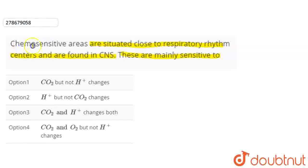So guys, this question asks what chemosensitive areas are sensitive to. These are present near respiratory rhythm centers, which are responsible for respiration regulation. And these are found near the CNS. CNS is Central Nervous System.